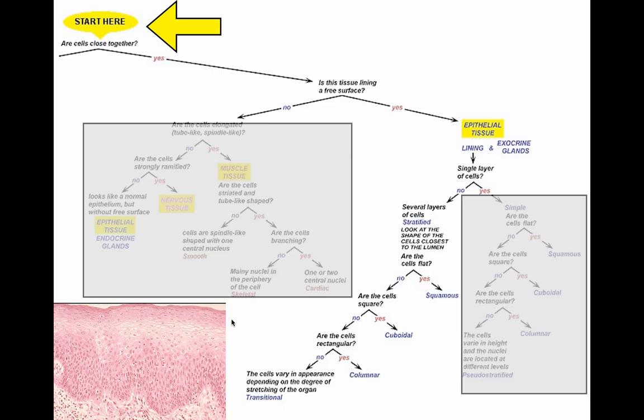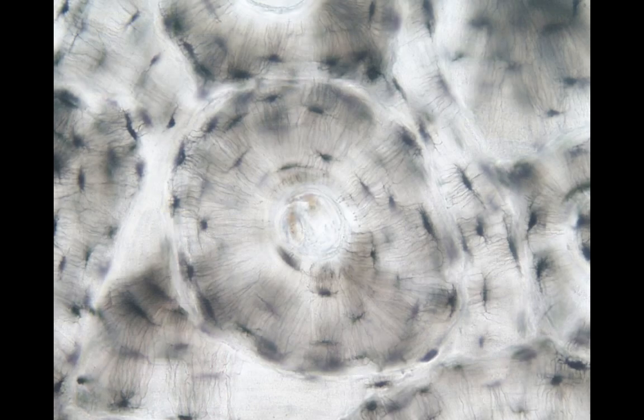If we look at the shape of the cells closest to the lumen or the edge in this case, are they flat? And the answer is yes, which means we get to stop right there. This is stratified squamous epithelia. Isn't that wonderful? One down, eight to go.